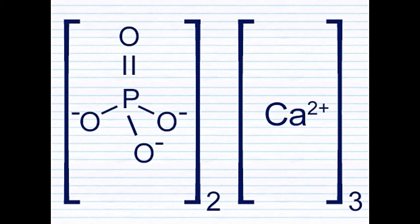Here's a representation of the structure of tricalcium diphosphate. For those who may have difficulty grasping this structure, here's a simpler illustration. The following is not an accurate representation, and is only meant to represent the distribution of the bonds in a rudimentary way.